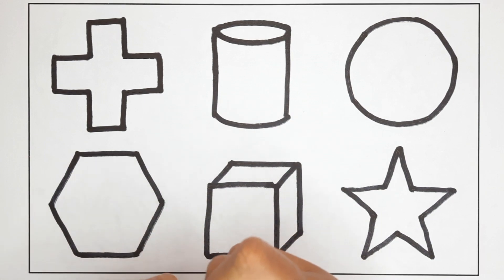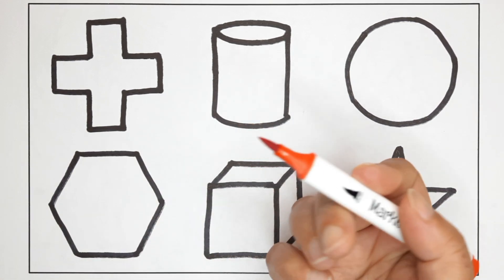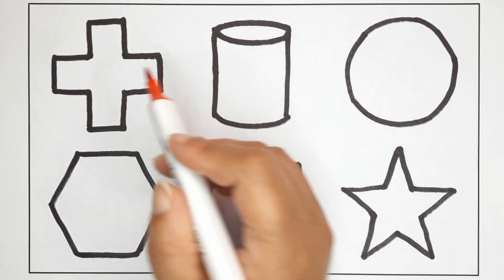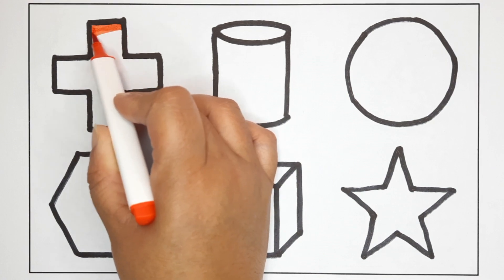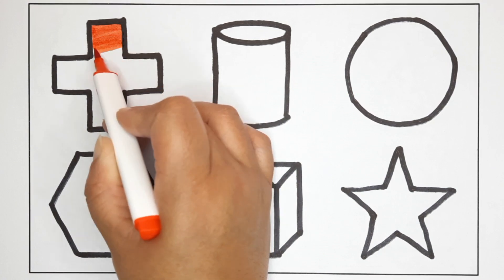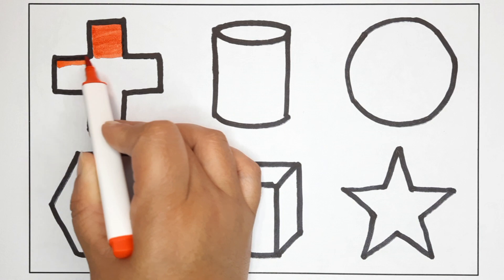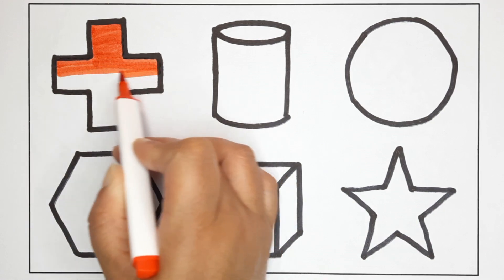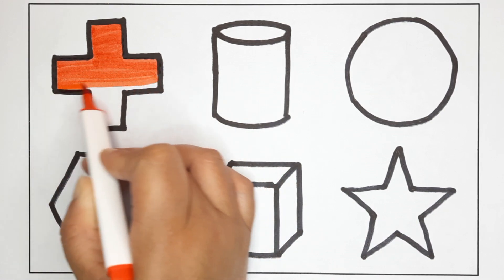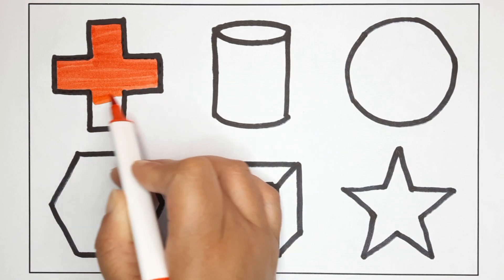Now we will color the shapes. This is red color. Now we will fill in the cross. This is a cross. What is this? This is a cross.